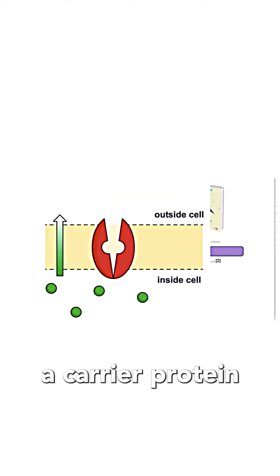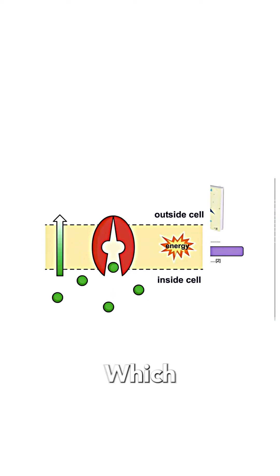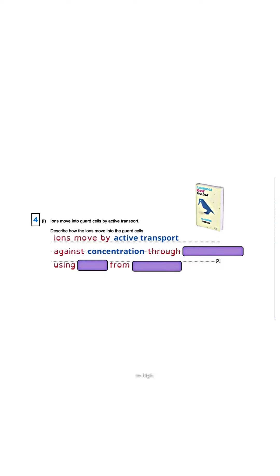We call this a carrier protein, which moves ions from low to high concentration. Using what? Active transport can only happen using energy from respiration.